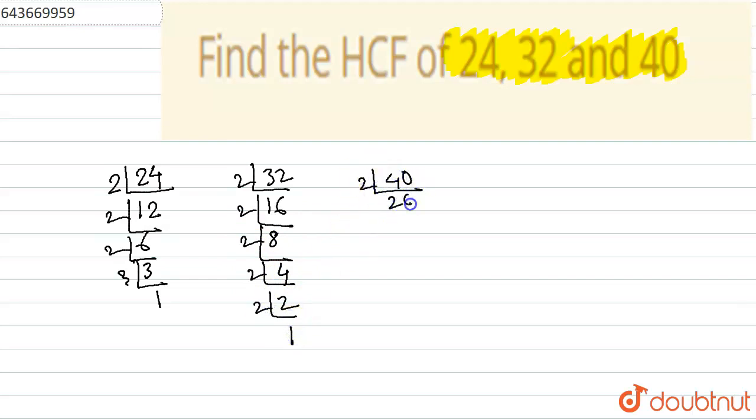Again for 40, it is: 2 times 20 is 40, 2 times 10 is 20, 2 times 5 is 10, and 1 times 5 is 5.